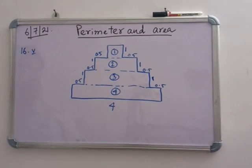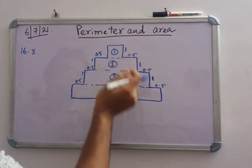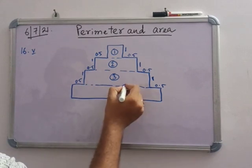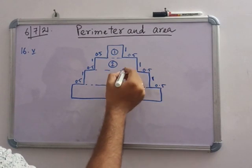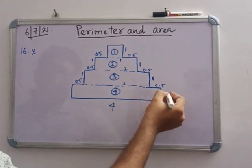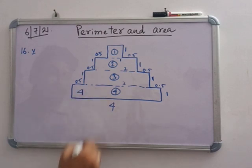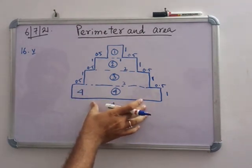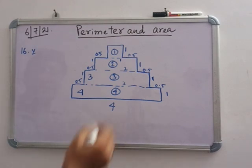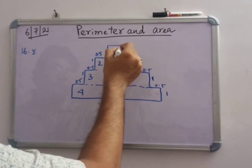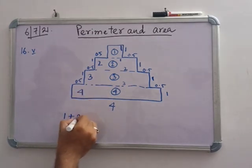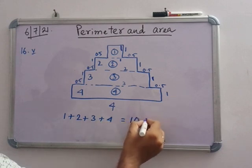Area of the first part: length is 4 and height is 1, so 4 into 1 equals 4. Area of the second part: 3 into 1 equals 3. Area of the third part: 2 into 1 equals 2. Area of the fourth part: 1 into 1 equals 1. Total area is 1 plus 2 plus 3 plus 4, which is 10 meter square.